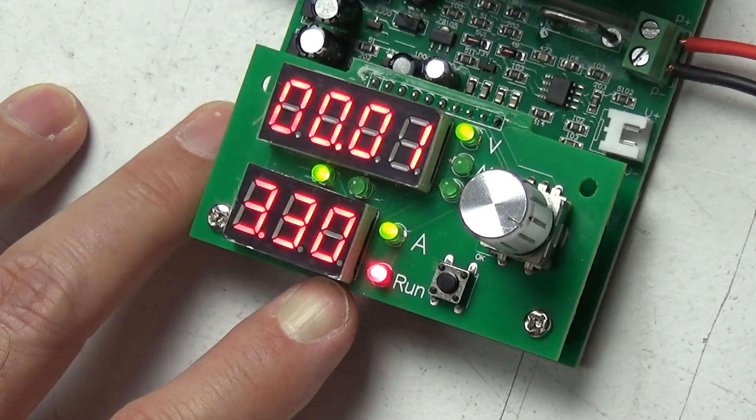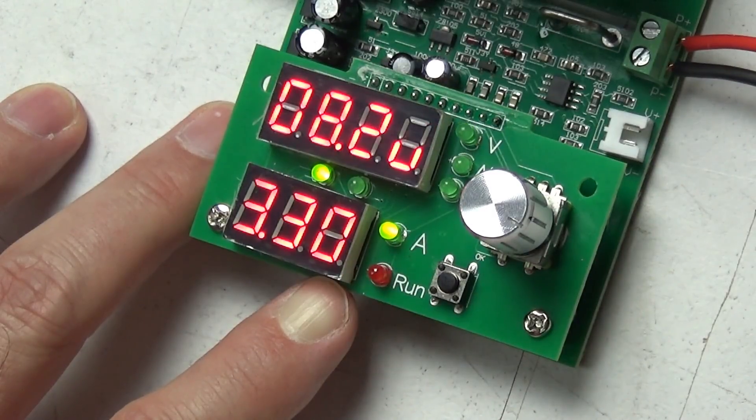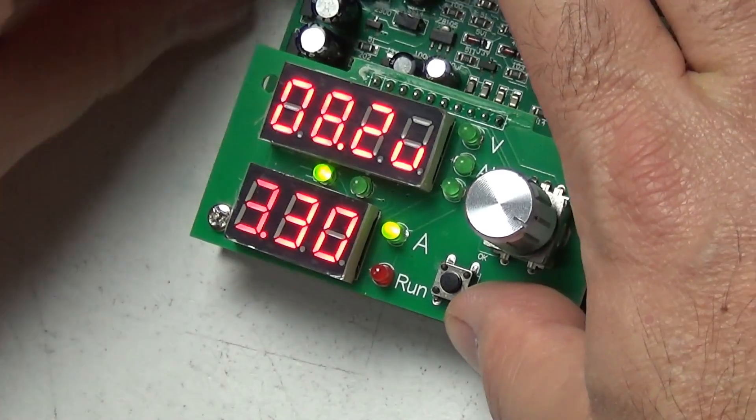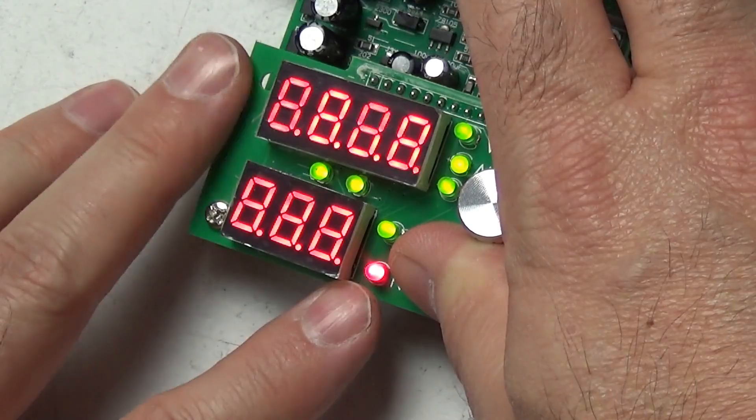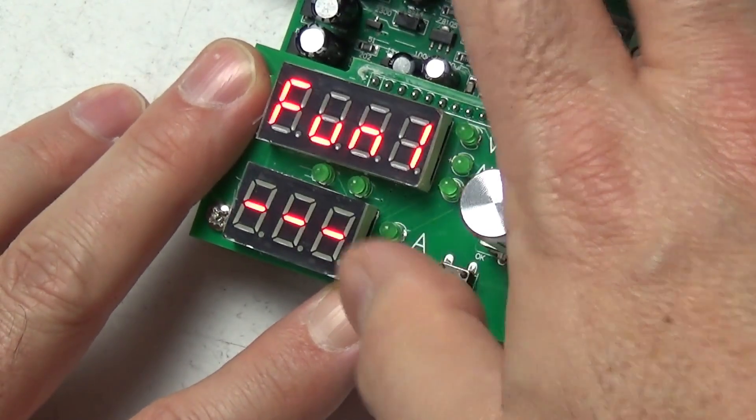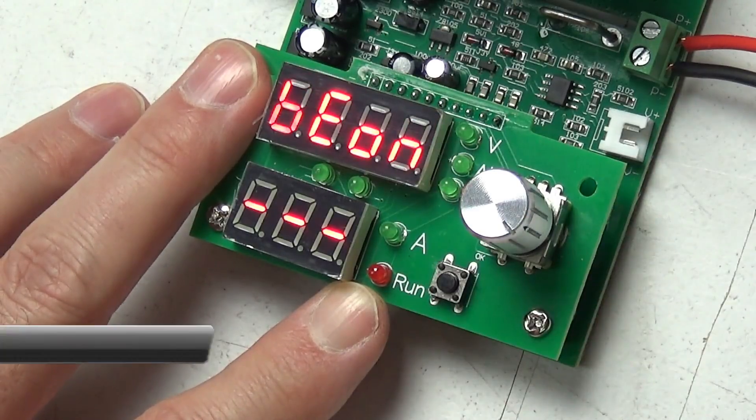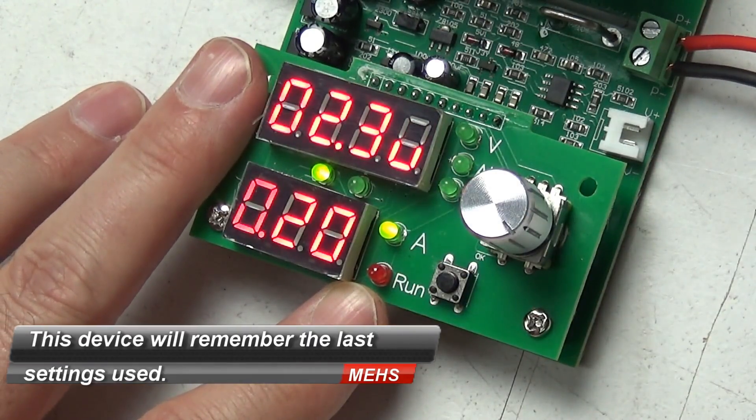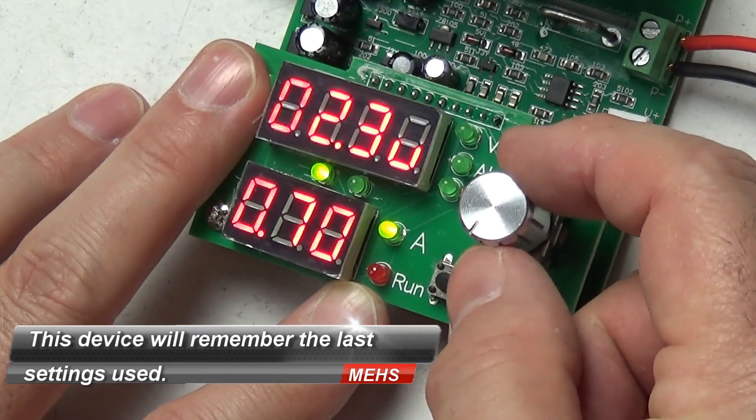So this will go all the way to 35 volts and all the way up to 10 amps, but obviously that combination is 300 watts of power. This is a maximum 60 watt electronic load, so if you are selecting something like 10 amps you can't go any higher than 6 volts. If you need a 12 volt test your maximum in this instance would be 5 amps, and it will give you a warning if you go over those limits.